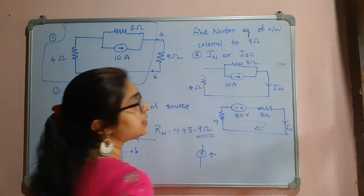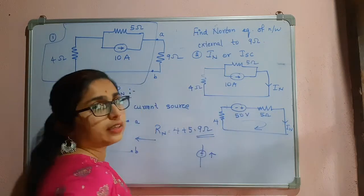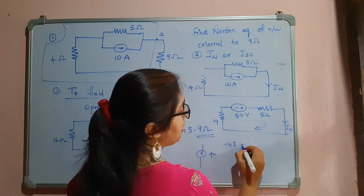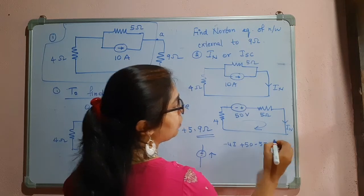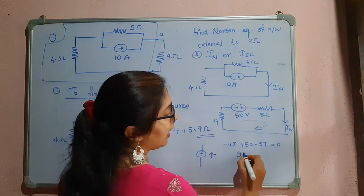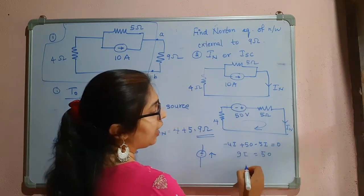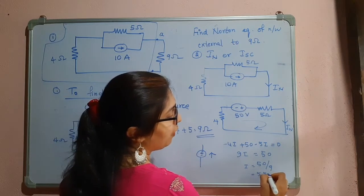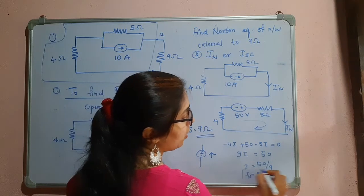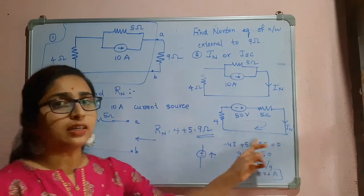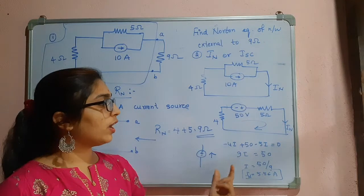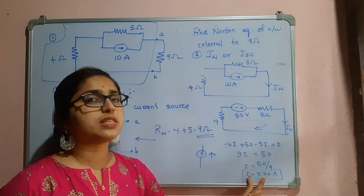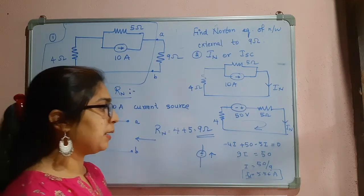Now I will apply KVL. So it is minus 4i plus 50 minus 5i, that is equal to 0. So 9i is equal to 50. I is equal to 50 by 9, which is nothing but 5.56 amperes. This is my Norton's current. I applied KVL and found IN or ISC, the short circuit current, which is 5.56 amperes.